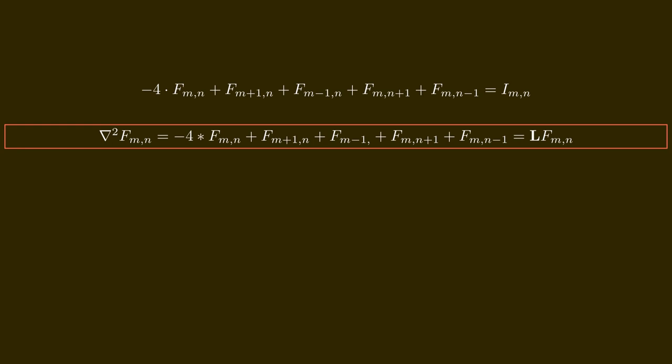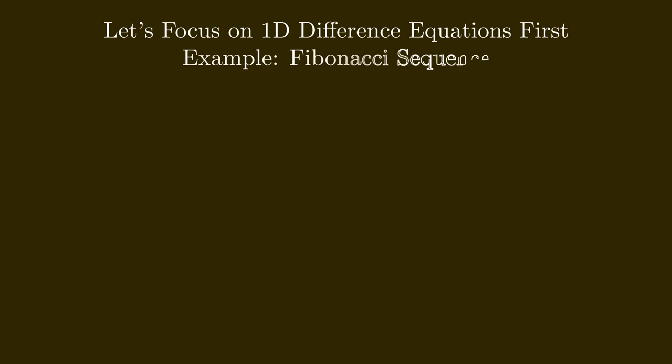For our purposes, let's think of it as a linear operator that takes each point, multiplies it by minus 4, and sums the neighboring points — denoted with the bold L symbol. In order to solve our problem, it makes sense to learn how to solve difference equations. Let's start with something simpler: one-dimensional difference equations, not two-dimensional ones as we have in our grid.